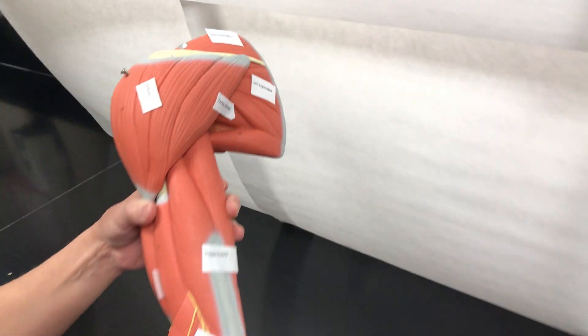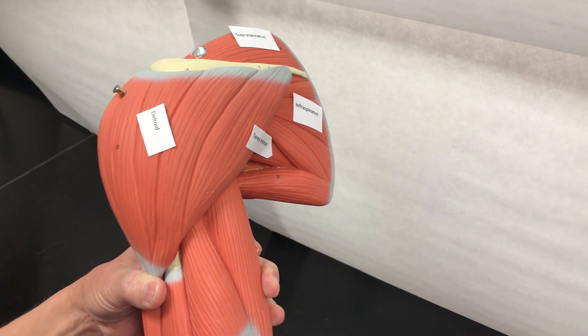We are going to cover the muscles of the arm. This is the deltoid, it's the muscle of the shoulder.